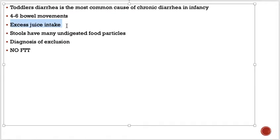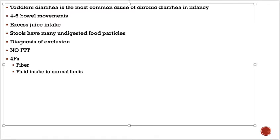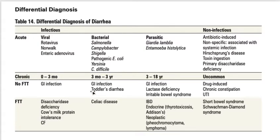Management of toddler's diarrhea: reassure the parents and change their diet. A famous treatment is called the four F's. Give them fiber in their diet, bring fluid intake to normal limits, give them fat-containing diet — their diet should contain at least 40 percent fats — and discourage fruit juice. Remember there is no failure to thrive in these patients.